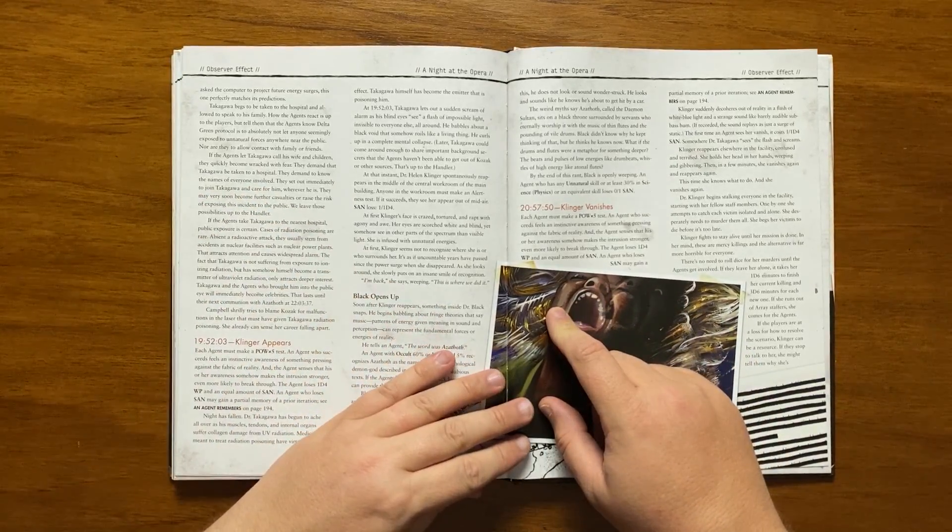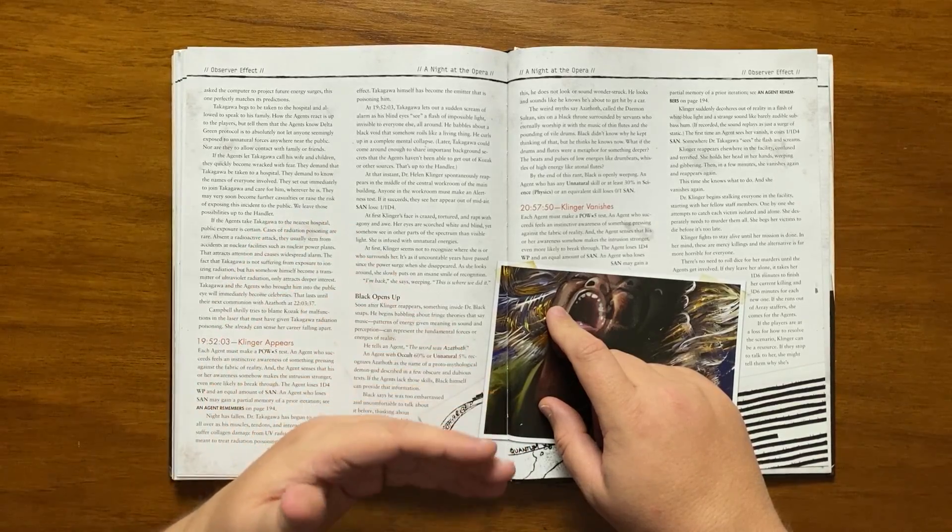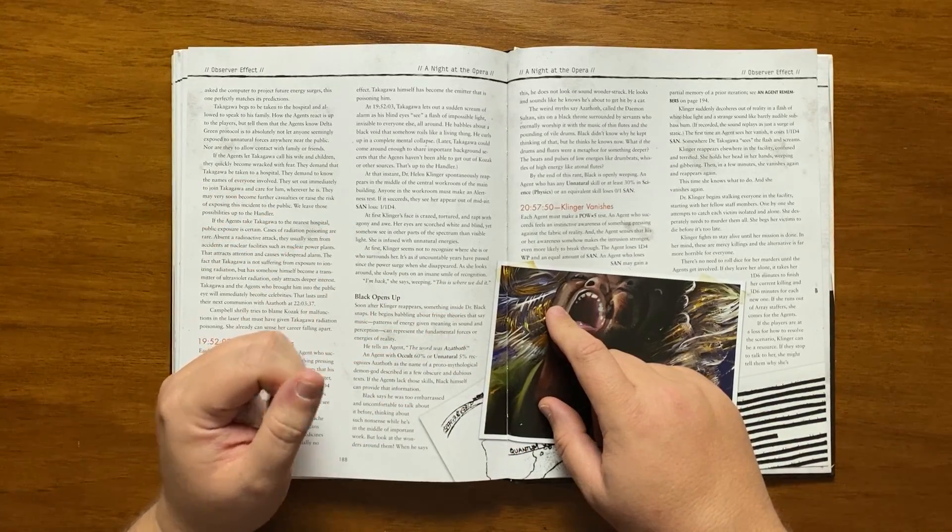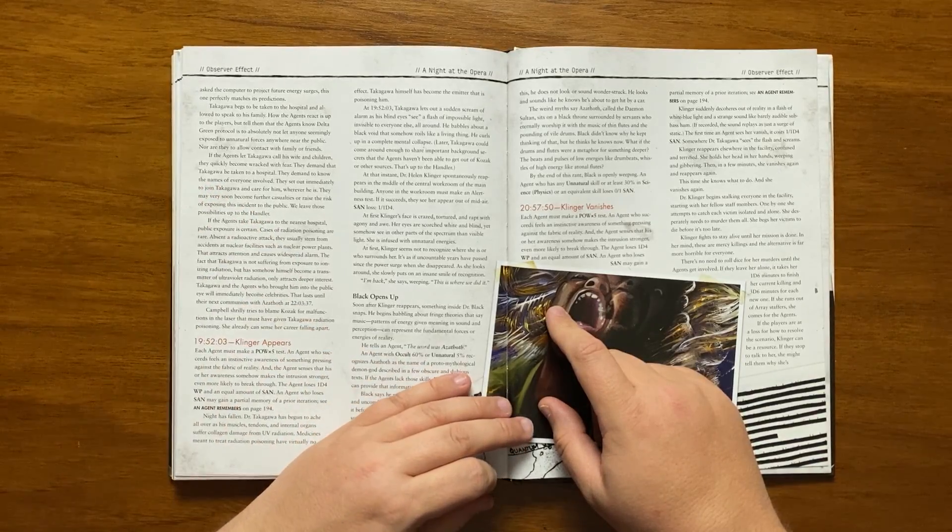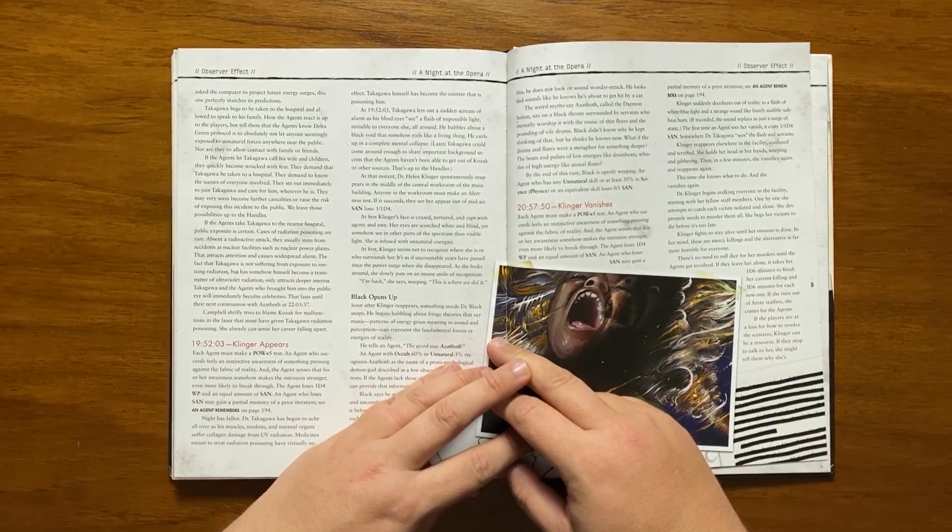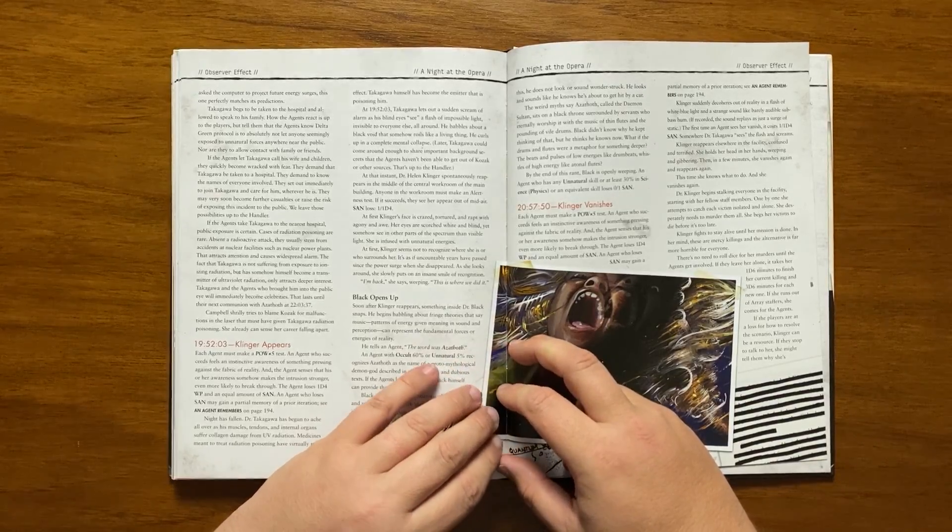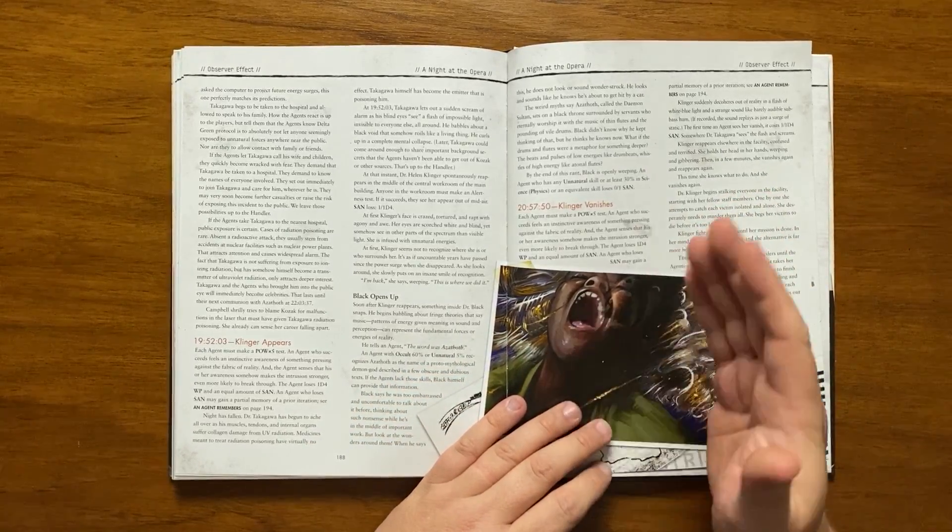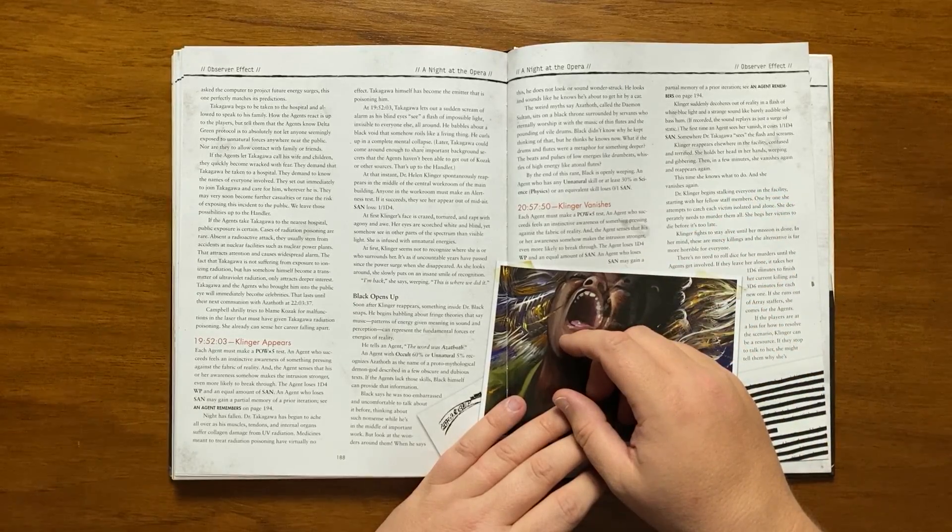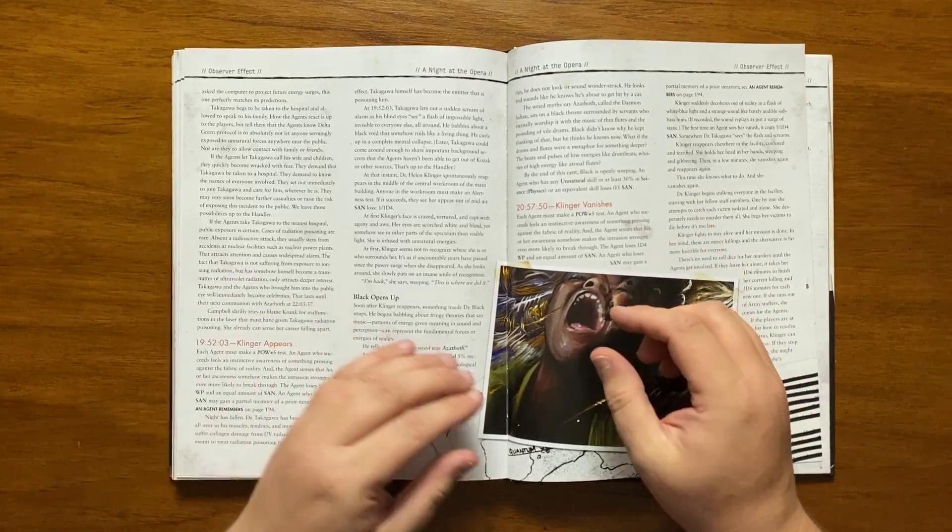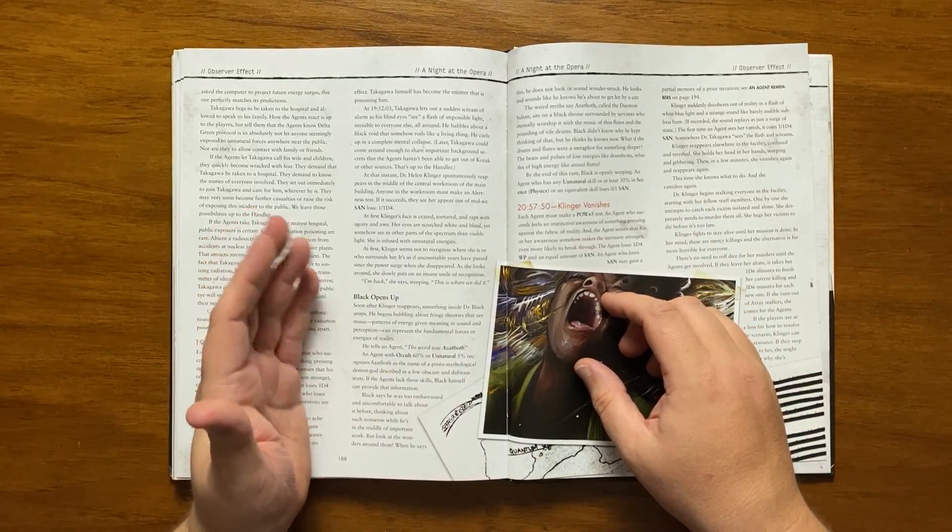Black will then start babbling about fringe theories about patterns of energy giving meaning and sound and perception can represent fundamental forces or energies in reality. He then drops a bombshell by telling the agents, the word was Azathoth. Explaining that he was too embarrassed to talk about it earlier but now feels he can. Black can tell them about the myths surrounding Azathoth and the sound of flutes and drums being played in its eternal worship. He will wonder if it ties in with the noise D has been translating and then breaks down in tears.